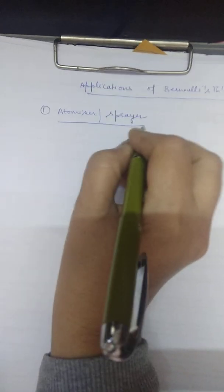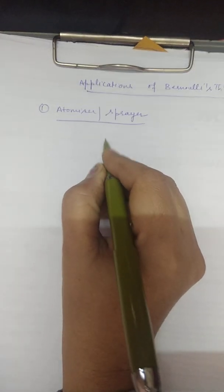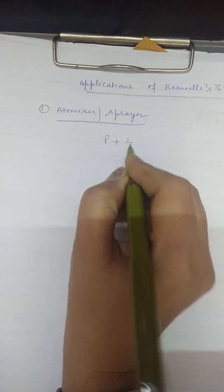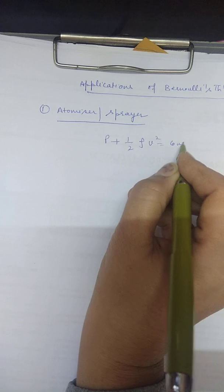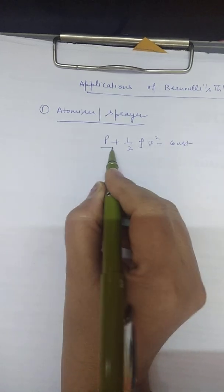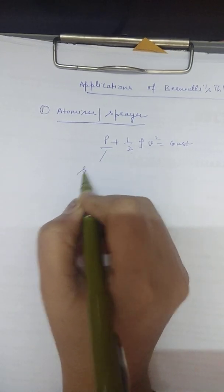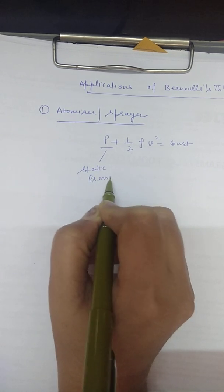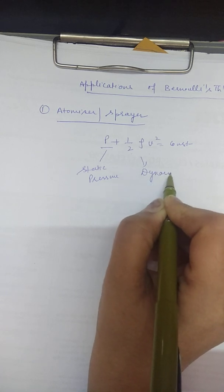As we know, one form of Bernoulli's theorem states that the sum of static pressure P plus half of rho times V squared is constant. This term is the static pressure, and this one is called the dynamic or kinetic pressure.